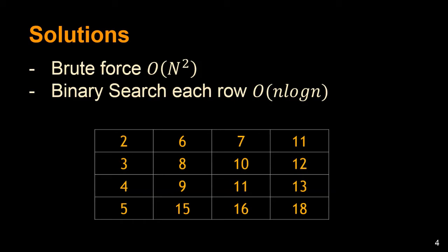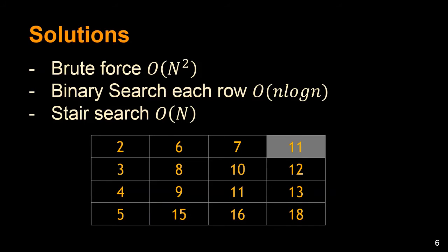So the third approach to do that is stair search. In stair search, we will start from the upper right corner of the matrix. If that element is greater than the upper right corner of the given matrix, we would go down in the column.